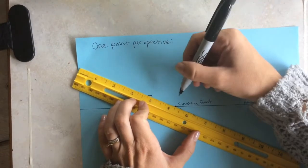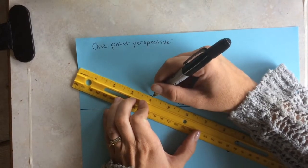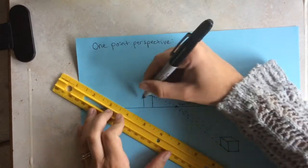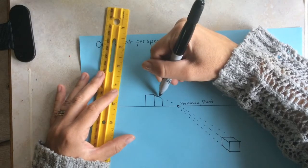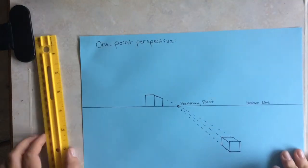Okay, next I'm going to show you a box drawn on the horizon line. You just want to take the one corner and connect it to the vanishing point. Line up your ruler to the box and draw a line.